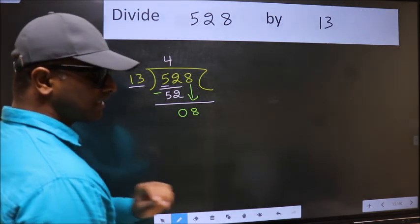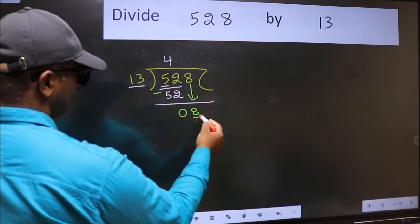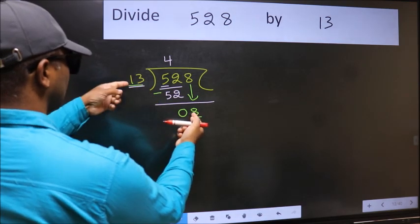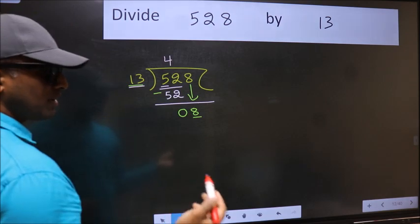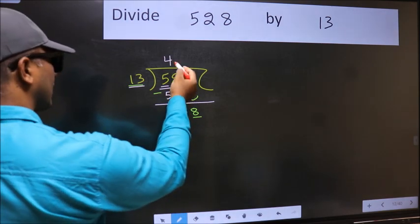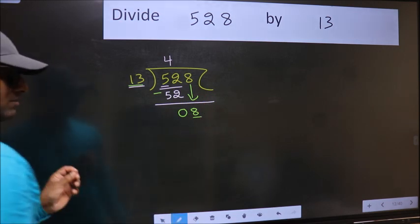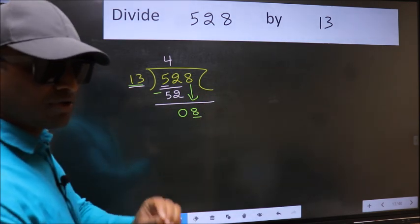And the mistake is this. Here we have 8 and here 13. 8 is smaller than 13. So what many do is they directly put dot, take 0, which is wrong.